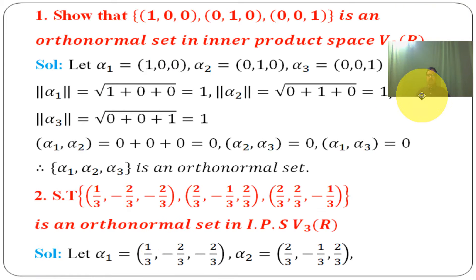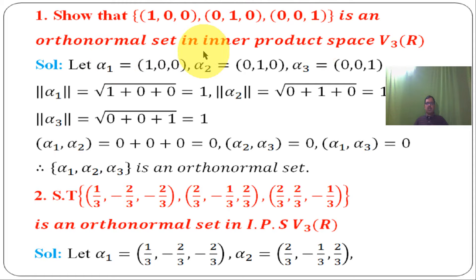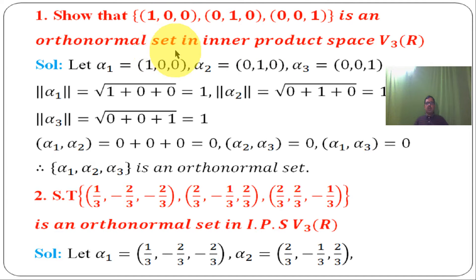First problem: show that the set of (1, 0, 0), (0, 1, 0), (0, 0, 1) is an orthonormal set in inner product space V3 over R. We need to show that this set of vectors forms an orthonormal set in the inner product space V3 over R.